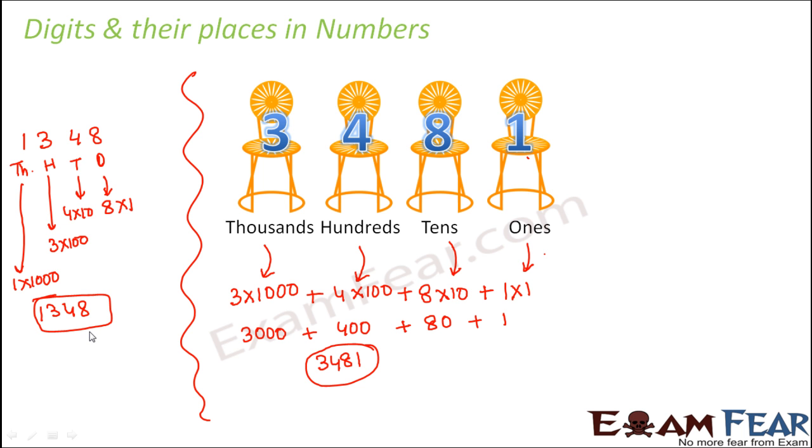Now 1348 is lesser, is far lesser than 3481. So they are not same. So what I am trying to say is the moment you change the position of the digits, depending upon the position of each digit, the entire value of the number changes, right? So when we talk about these places for each digit, we are actually talking about the place value of each digit.